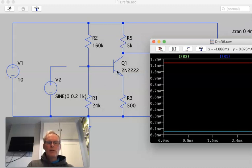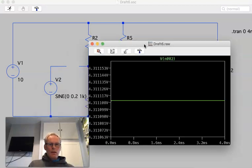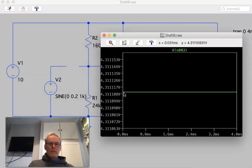This transistor has got a beta of 200. What's the quiescent voltage there? Yep, it's not 5 volts.